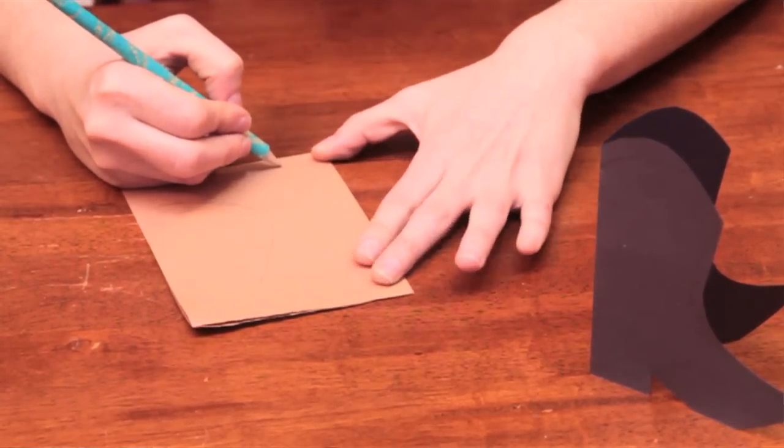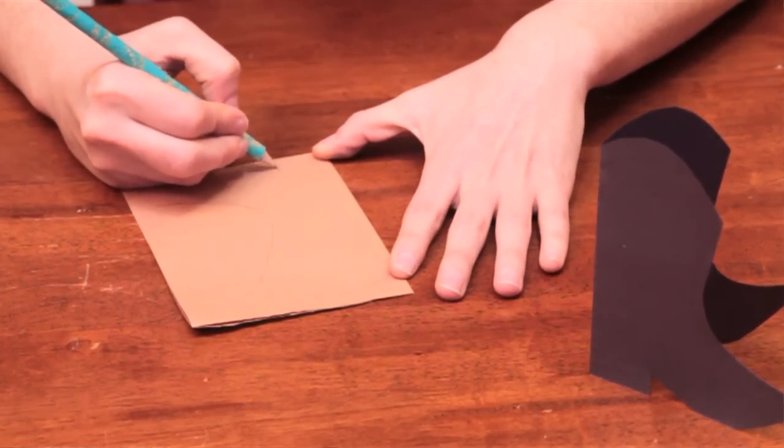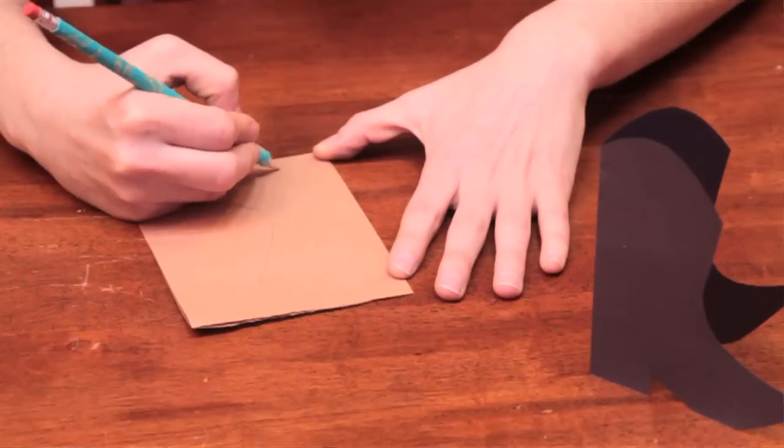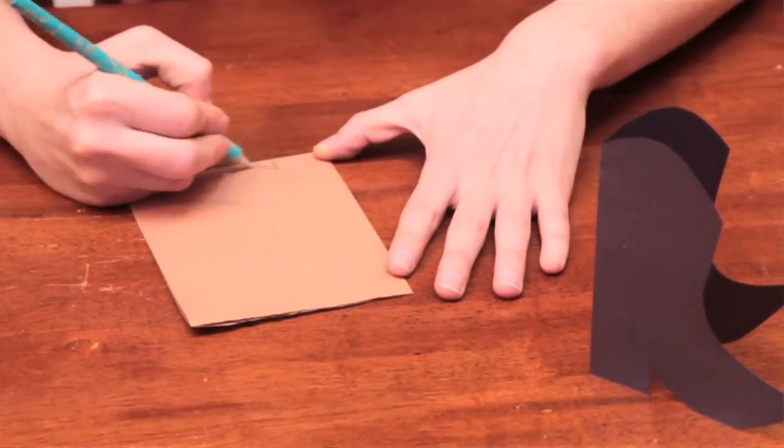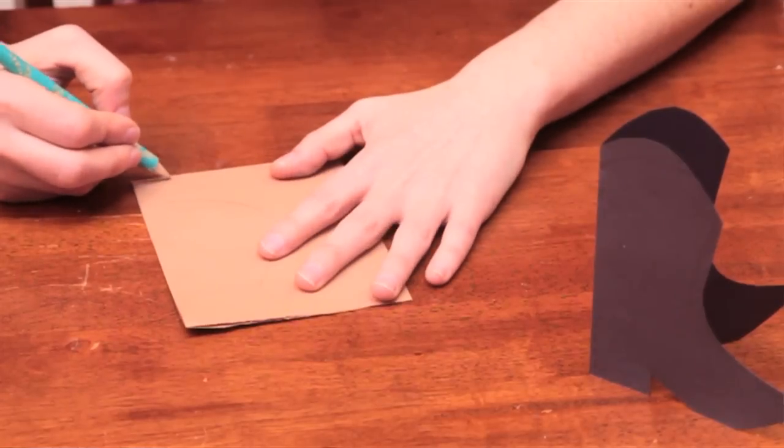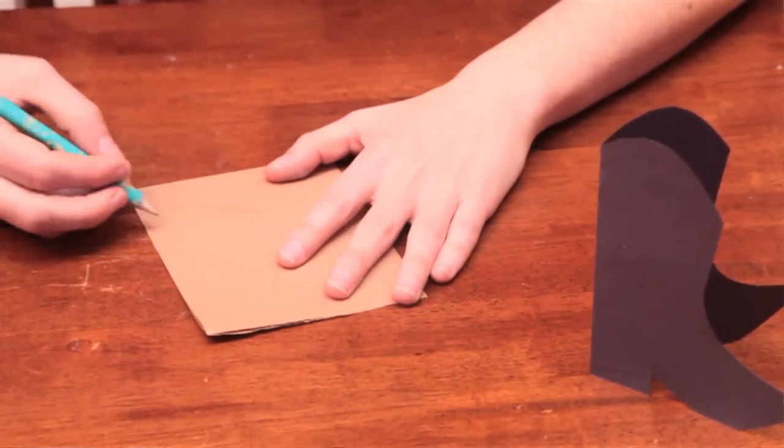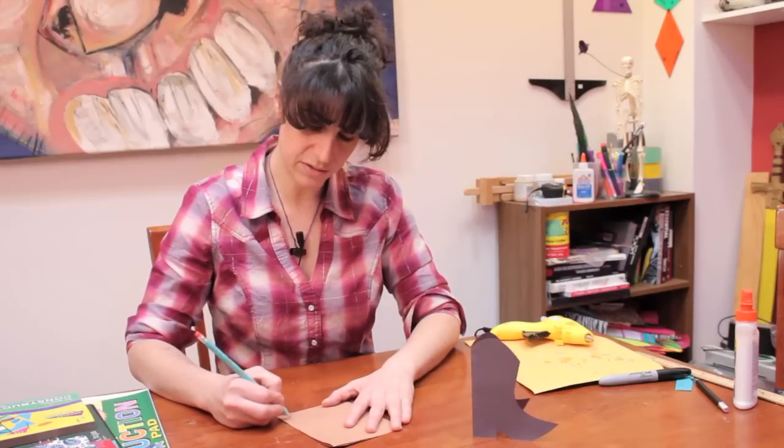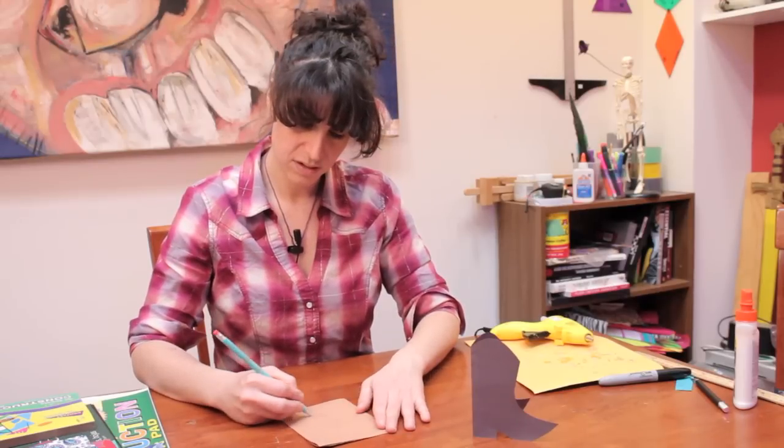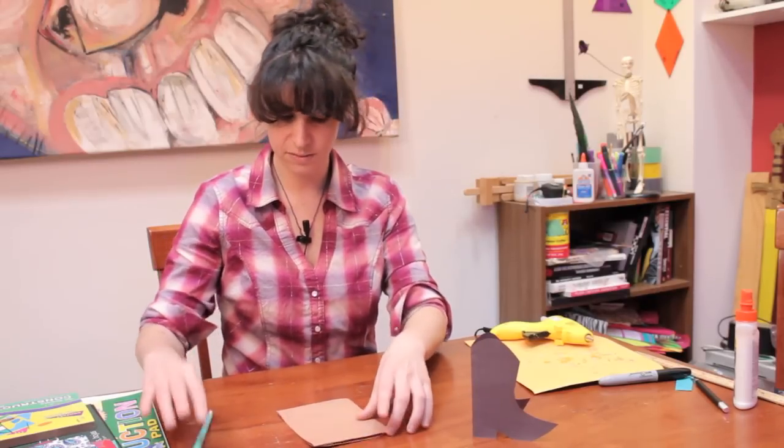And then come down to this corner to put in a heel. Keep that straight. Make a little angle and then try to keep some straightness in the bottom so that it's easier to stand up. And then connect those lines.